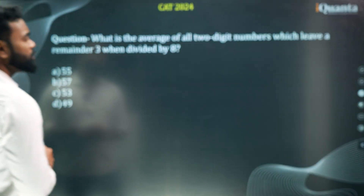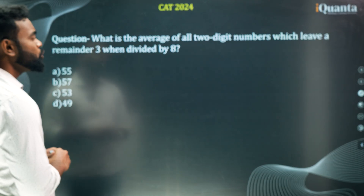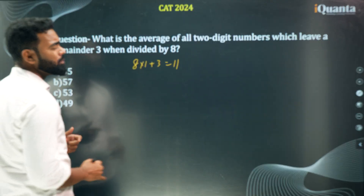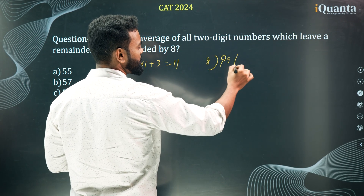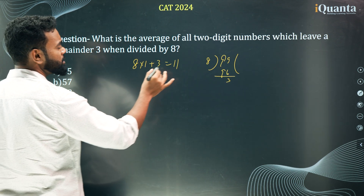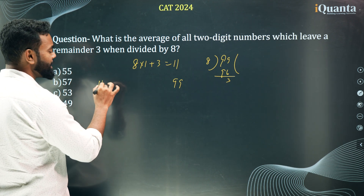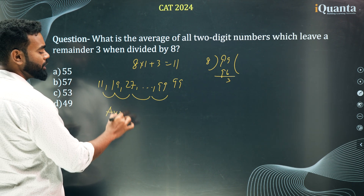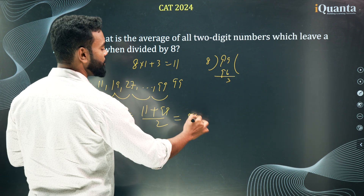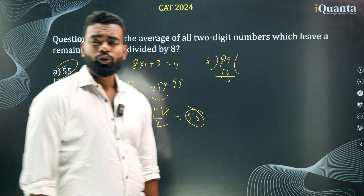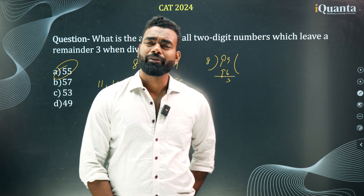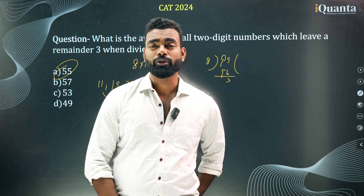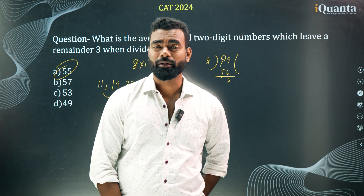Next question: what is the average of all 2-digit numbers that leave a remainder of 3 when divided by 8? The smallest such 2-digit number is 8×1+3 = 11. The largest: divide 99 by 8 → quotient 12, remainder 3, so 8×12+3 = 99. These numbers are equidistant (arithmetic progression), so the average = (first + last)/2 = (11+99)/2 = 55. Do not start from 3, as it is not a 2-digit number.